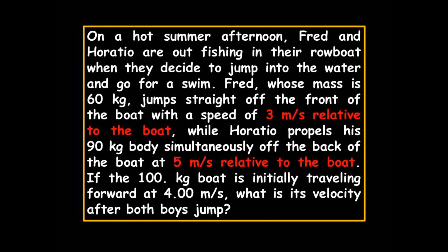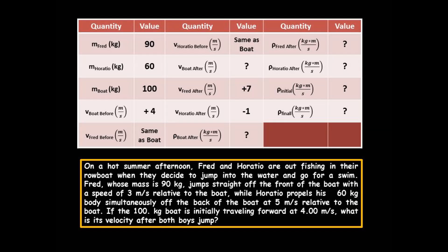The table lists the knowns and unknowns. A word of caution: motion of the boat is considered positive, so the boat's velocity before the boys jump is +4 m/s. Fred's velocity after jumping is +7 m/s — because it's a vector problem, he jumps at +3 m/s off the front while the boat moves at +4, giving +7. Horatio jumps at −5 m/s off the back, plus the boat's +4, giving −1 m/s. Please verify that and ask in class if you have questions.